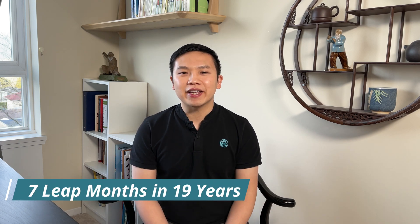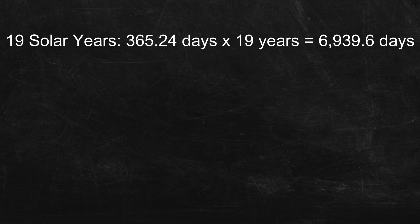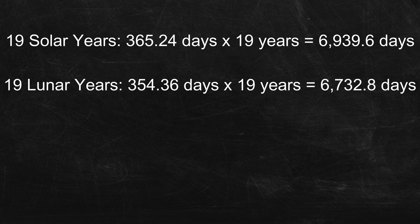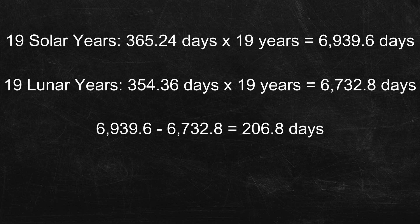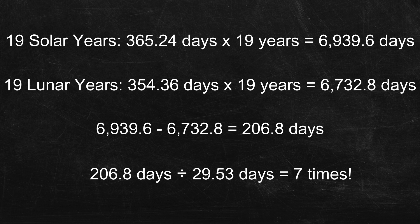How does that work? Let me explain using mathematics. For the solar portion, 19 solar years have 6,939.6 days, which is calculated by multiplying 365.24 and 19. And for the lunar portion, 19 lunar years have 6,732.8 days, which is calculated by multiplying 354.36 and 19. So the difference between these two is 206.8 days. And interestingly, 206.8 days divided by 29.5 days — the number of days in a lunar month — equals seven. That is why we add in seven leap months over 19 years, in order to match the solar and the lunar portions.